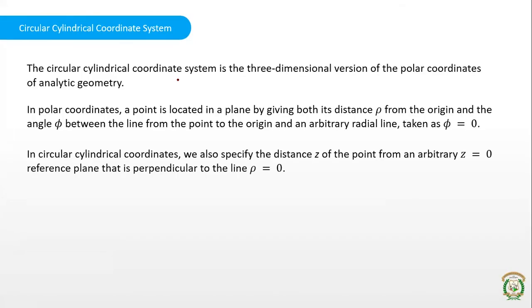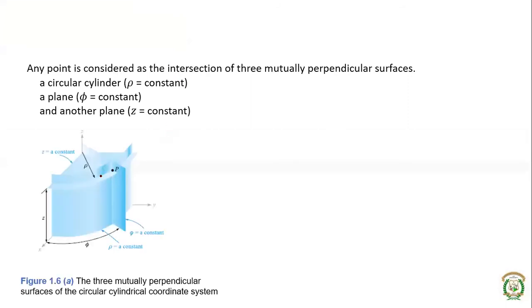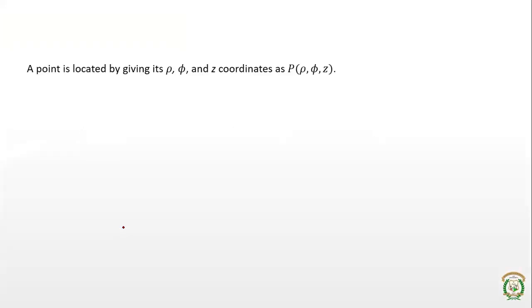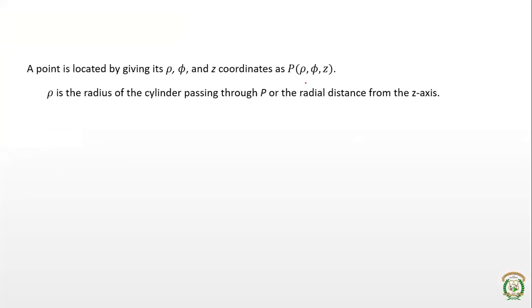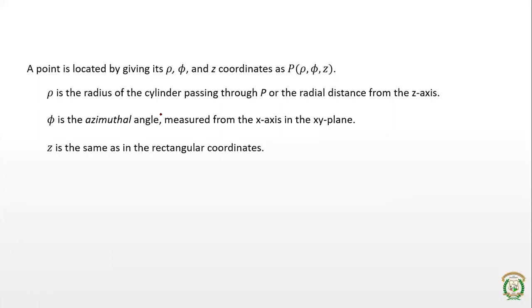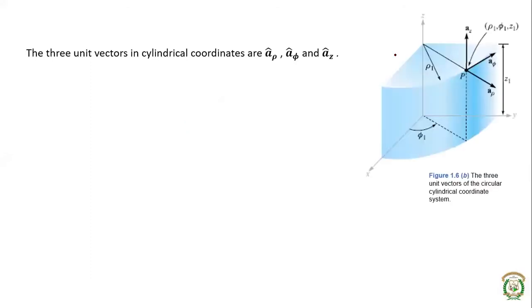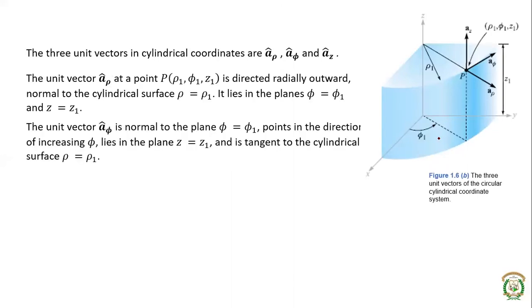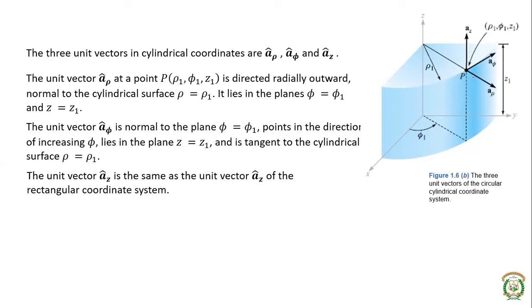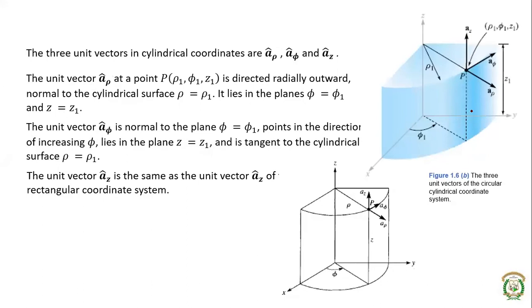In the previous class we saw the circular cylindrical coordinate system, where we have three coordinates: rho, phi, and z. Any point is seen as the intersection of three mutually perpendicular surfaces — a cylindrical surface and two planes. We saw how a point is represented in terms of rho, phi, and z, where rho is the radius, phi is the azimuthal angle, and z is the same as in the rectangular coordinate system.